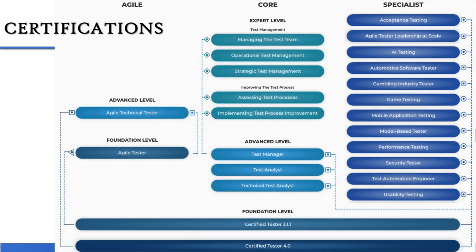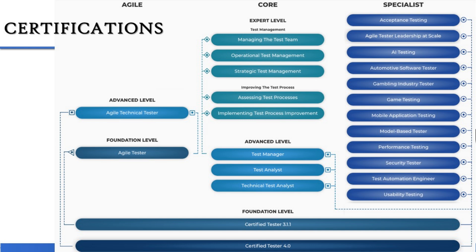You can look forward to any one of these as an additional certification as soon as you are done with your CTFL — the foundation level. On the agile side, if you have taken your foundation level on version 3.1, you can take the Agile Tester first and then look forward to Agile Technical Tester. But if you have taken the ISTQB Foundation 4.0, you can directly move to the advanced level Agile Technical Tester. Additionally, there is a specialist certification for leadership at scale — the Scaled Agile Framework.